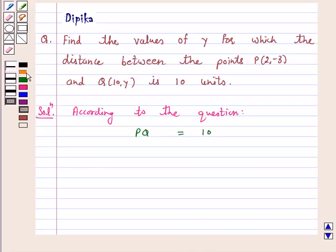This implies PQ square is equal to 10 square which is equal to 100.